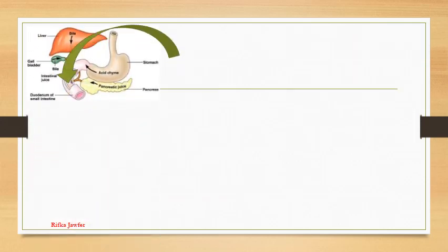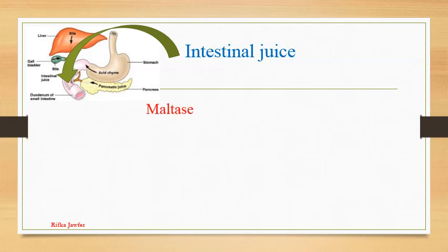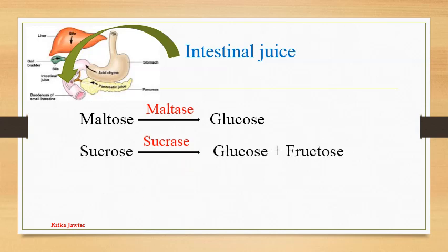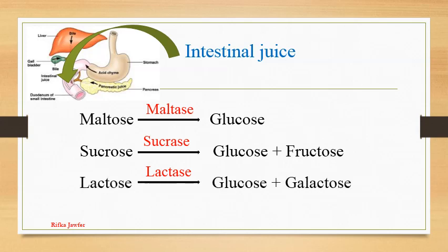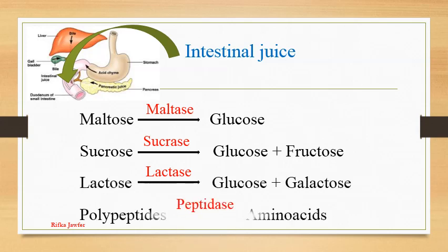The wall of the intestine secretes intestinal juice. Maltase present in intestinal juice converts maltose to glucose. Sucrase converts sucrose to glucose and fructose. Lactase converts lactose to glucose and galactose. Peptidase converts polypeptides to amino acids. Digestion ends here. Mucus present in the intestinal juice lubricates the food and protects the inner lining of the gut wall.